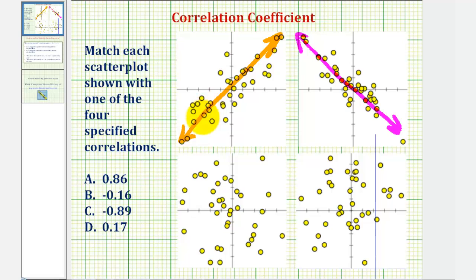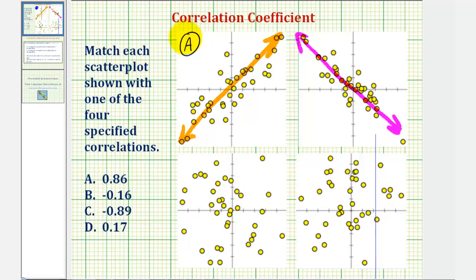Notice this first line is increasing — as x increases, y increases — so it has a positive slope. Therefore, the correlation coefficient would be closer to positive one. A good choice for the correlation coefficient for this scatterplot would be A, 0.86. If we selected positive 0.17, the scatterplot would have to be more scattered, because that value is closer to zero.